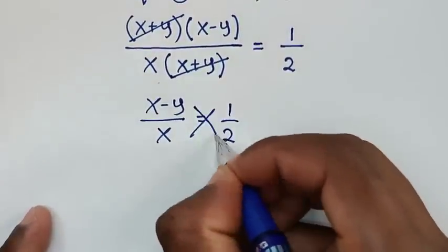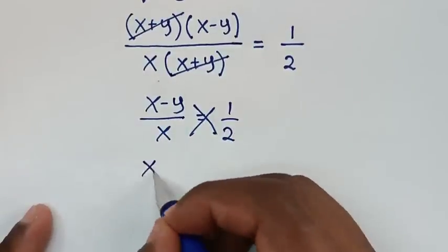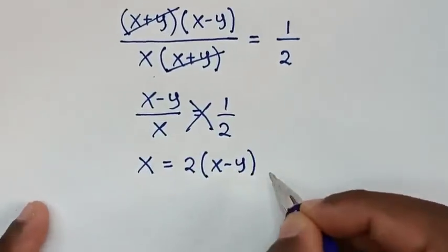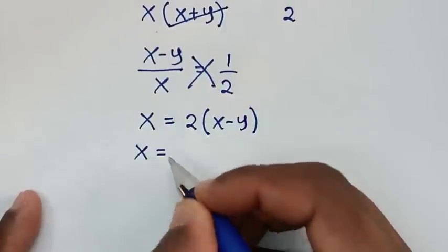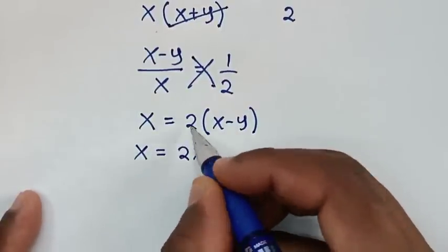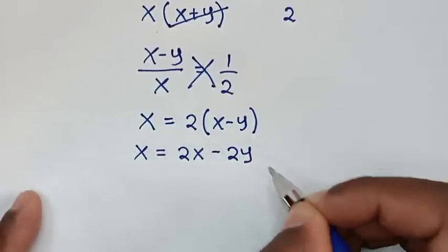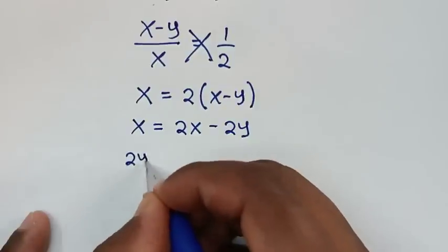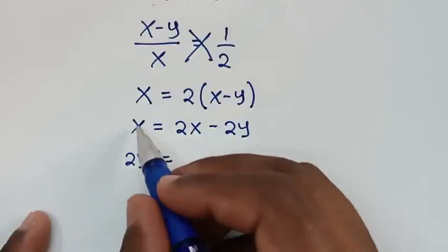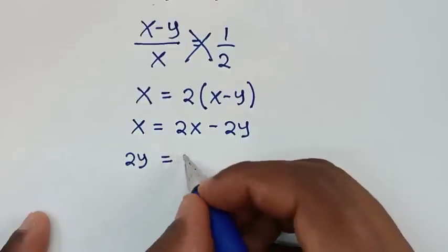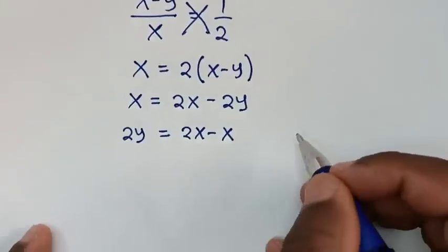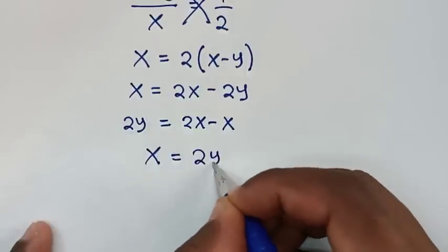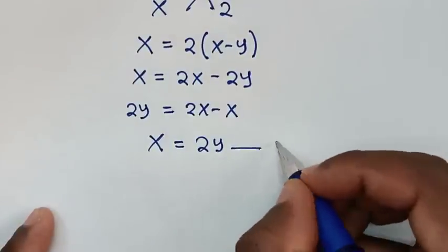Then we cross multiply: x times 1 = 2 times (x - y), so x = 2x - 2y. Taking -2y to the other side gives 2y = 2x - x, so 2y = x, meaning x = 2y. We let this as equation 5.